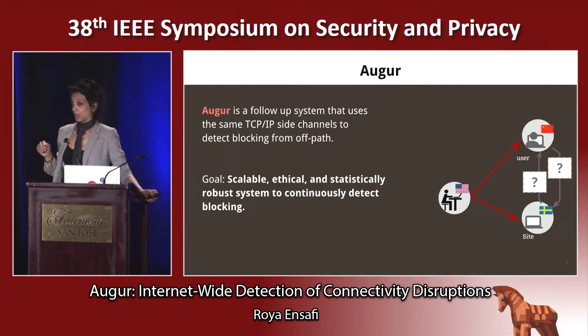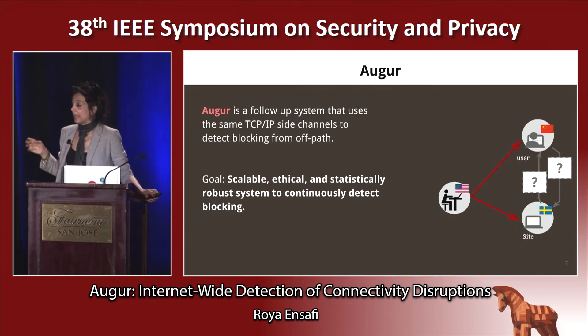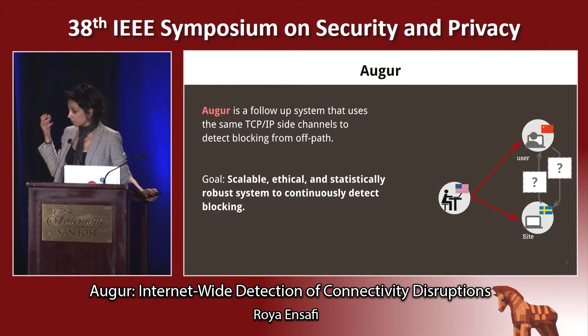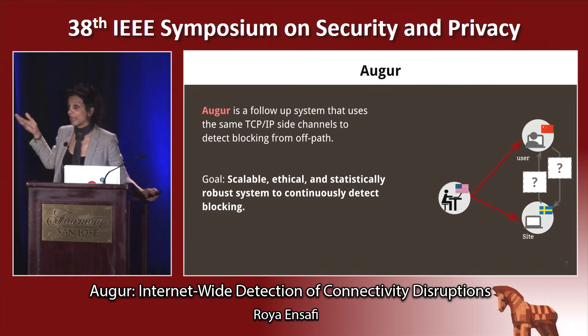In this talk, we build on SpookyScan and construct Augur, a system that measures connectivity disruption globally and continuously.